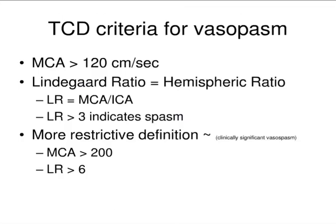What are the criteria? There's been a lot of work on criteria for transcranial Doppler ultrasound with vasospasm, and it's very well accepted in terms of showing vasospasm. The exact thresholds are debated. Some people use the classical number of greater than 120 and the Lindegard ratio — or what is now called the hemispheric ratio — which is the middle cerebral artery divided by the internal carotid artery. A ratio greater than 3 would potentially indicate spasm. Some people use criteria of MCA greater than 200 and a Lindegard ratio greater than 6 to really indicate clinically significant vasospasm.